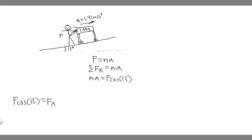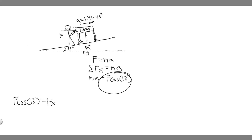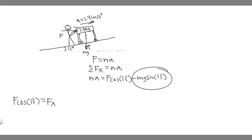We also have another force acting in the x direction: the weight force mg going down. There's a component of it along the incline. To find the component of the weight force along the incline, you multiply mg by the sine of the incline angle — in this case, sine of 13. Since it's pushing us down the incline, it's negative, so we subtract mg times sine of 13.